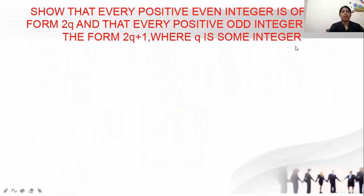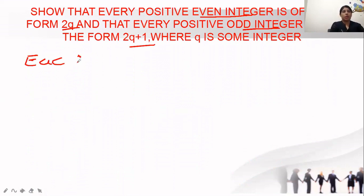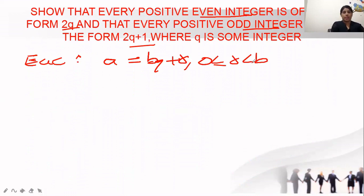The first question asks us to show that every positive even integer is of the form 2q, and every odd integer is of the form 2q plus 1. As per Euclid's Division Lemma, our equation is: a is equal to bq plus r, where 0 ≤ r < b. In this question, b is given as 2, so a equals 2q plus r.